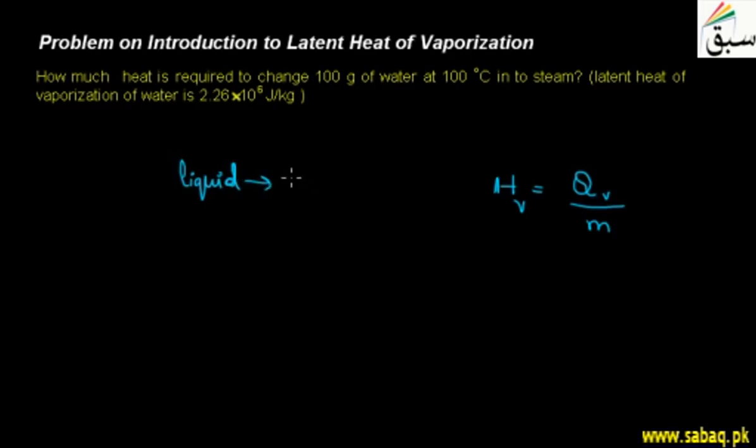We want to convert liquid to gas, or liquid into steam. The temperature is maintained at the boiling point of water, 100°C, while the liquid state converts to gas state. This is called latent heat of vaporization.